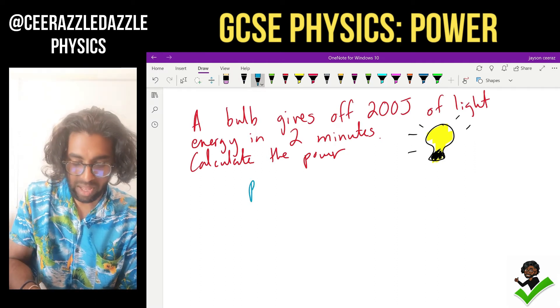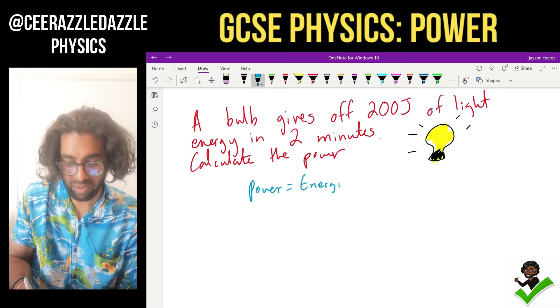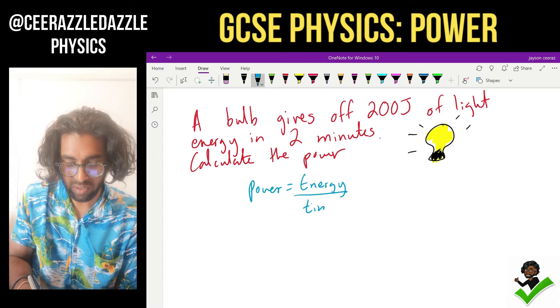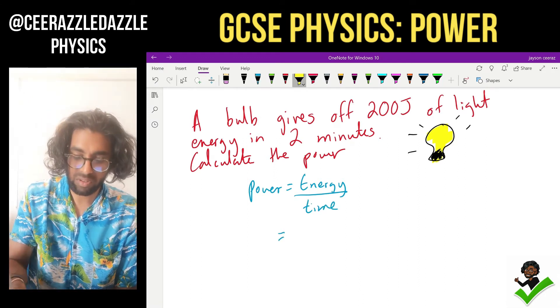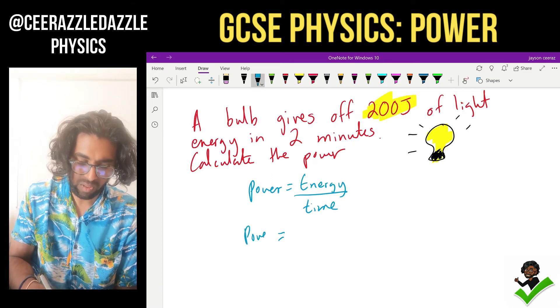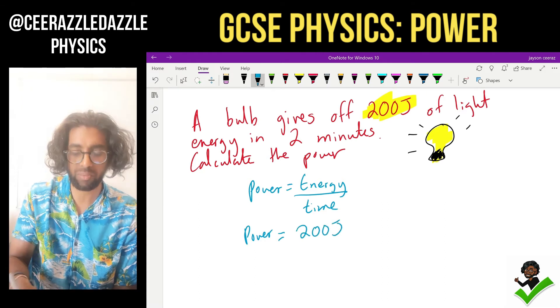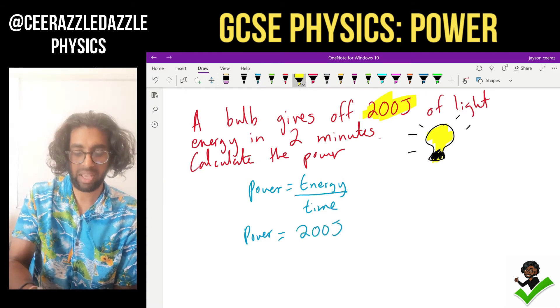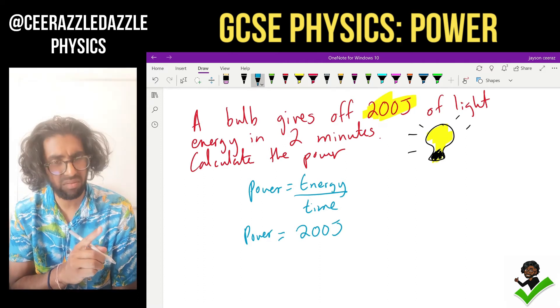So we know that power is equal to energy divided by the time taken. The energy, what is the energy? It is 200 joules. So let's put that down. The energy is 200 joules. I got 200 from the top. The time. Careful. What is the time? Is it two? Is it two minutes? Well, no.